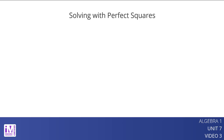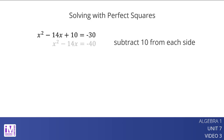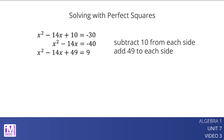Turning an expression into a perfect square can be a good way to solve a quadratic equation. Suppose we wanted to solve x squared minus 14x plus 10 equals negative 30. Let's transform the left side of the equation into a perfect square while keeping the equality of the two sides. Subtract 10 from each side and then add 49 to each side.